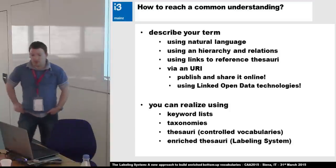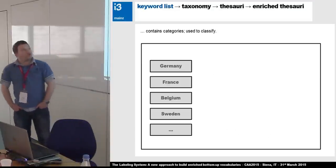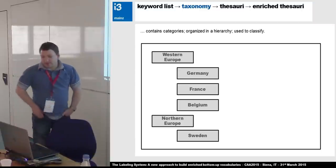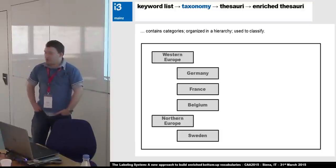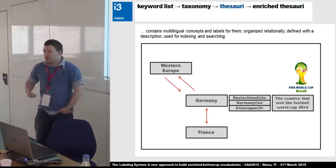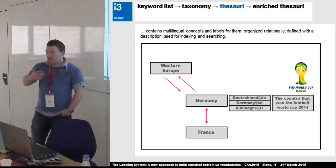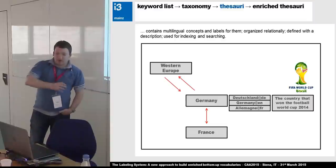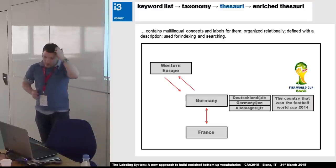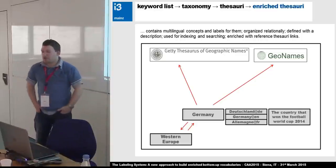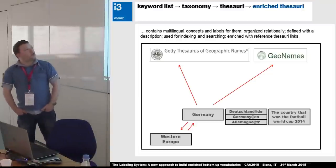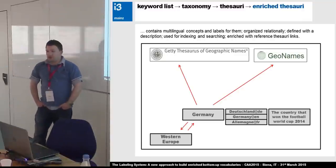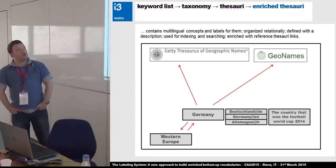That's the outcome of the labeling system we are talking about today. For example, if we have terms like countries in Europe, you can put them in a list — a keyword list. Then you can create hierarchies, classifying into Western Europe or Northern Europe. Then you can build up a thesaurus with vocabulary terms described in different languages, with relations and hierarchies. And you can have an enriched thesaurus: take your vocabulary term and link it to reference thesauri available on the net, like GeoNames or the TGN — at that moment we really know which Germany we are talking about.